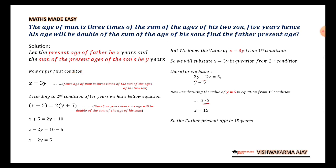So, X is equal to 3 times of 5 since the value of Y is 5. So, the value of X is 15. Hence, the father's present age is 15 years. That's it.